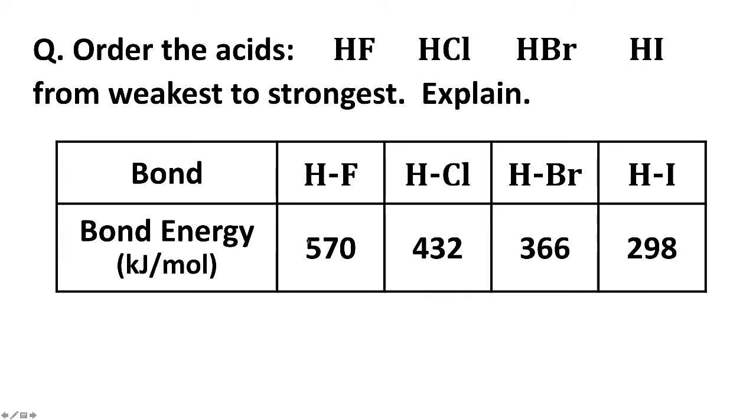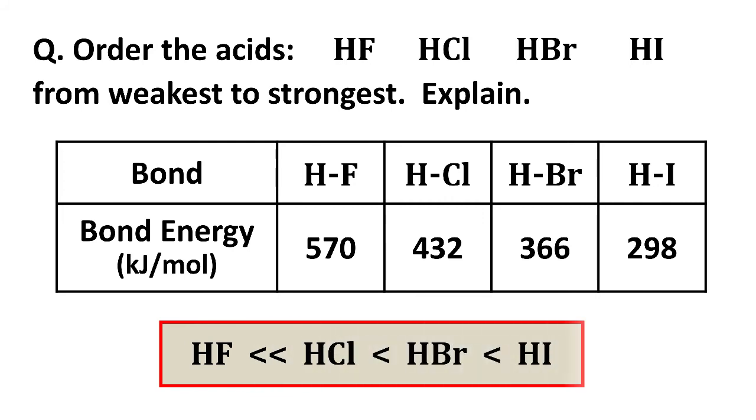HF is a much stronger bond, 570 kilojoules per mole compared to HCl. That's stronger than HBr and HI is the weakest. And so since a stronger bond corresponds to less dissociation and therefore a weaker acid and a weaker bond corresponds to more dissociation and a stronger acid. The ordering from weakest hydrogen fluoride or hydrofluoric acid to strongest hydroiodic acid is as follows.